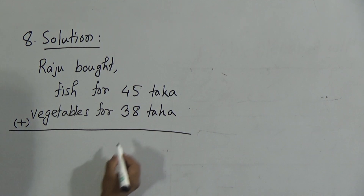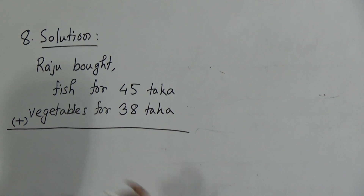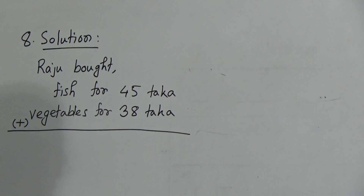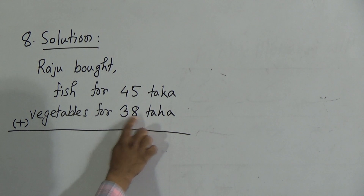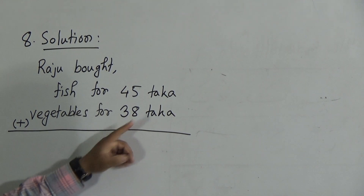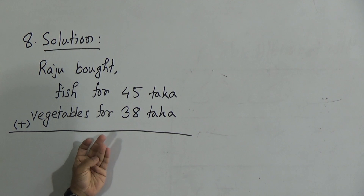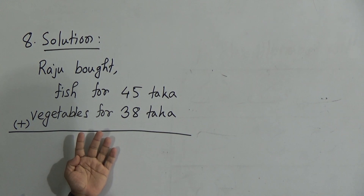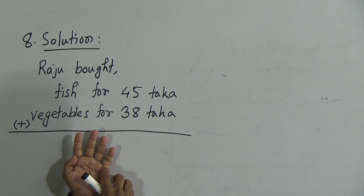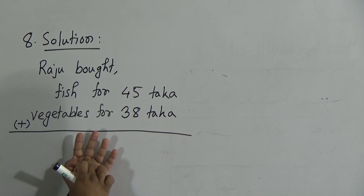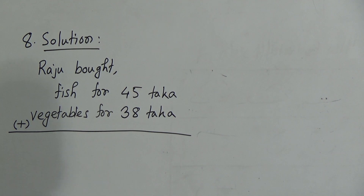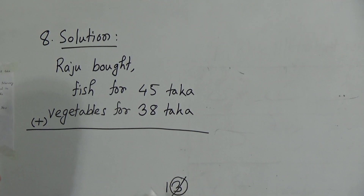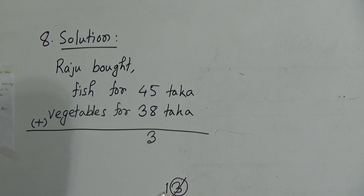Now we should add these 2 numbers. When we add something, we should start from the one's place. That means, first of all, we should add 5 and 8. If we add 5 with 8, we count up from 8 by 5 more and get 13. That means when we add these 2, we get 13. And 13 is a double-digit number, so we write down only the one's place digit 3 here in the one's place. Now, 1 is carrying in our hand.